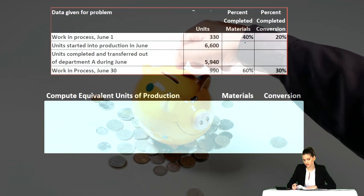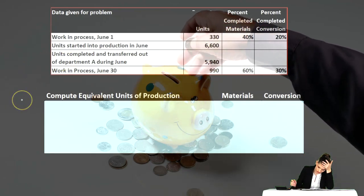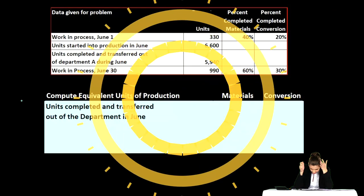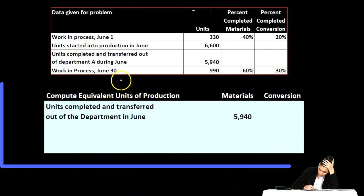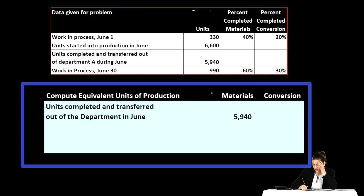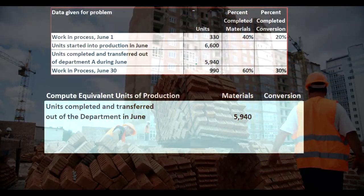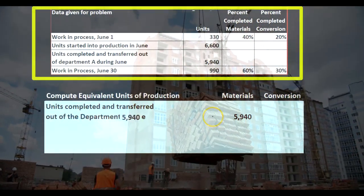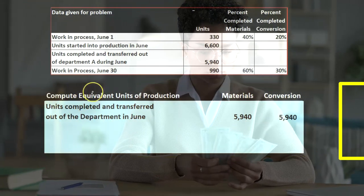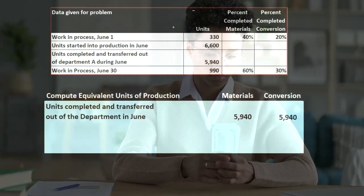Then we're going to have the computation of the equivalent units of production. We have the units completed and transferred out of the department in June, which is 5,940 for materials. We're looking at that same 5,940 considering it in terms of materials and in terms of conversion, because we're considering equivalent units — not total units, not units as if they're whole, but equivalent units with regard to their two components.